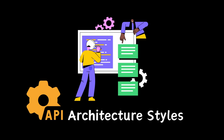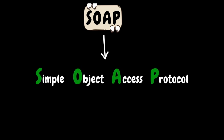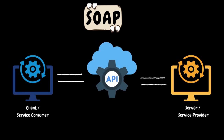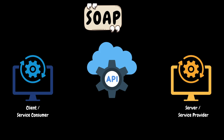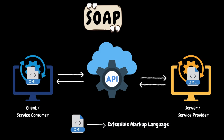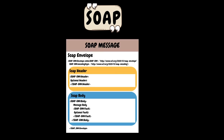Now let's understand different API architecture styles. API architecture styles define the structure, rules, and standards for creating and using APIs. Different architecture styles offer varying approaches to how APIs handle requests, manage resources, and facilitate communication between systems. Organizations choose and implement an architectural style based on their specific requirements. The first one is SOAP, which stands for Simple Object Access Protocol. SOAP is a communication protocol that provides a standardized way for different software applications to communicate and exchange services in the form of SOAP messages over the internet. SOAP messages typically use XML as the preferred data exchange format and have a well-defined structure made up of an envelope element containing an optional header element and a mandatory body element. The fault element contained in the body is used for reporting errors.